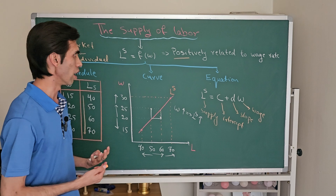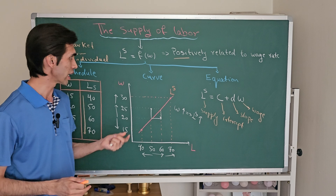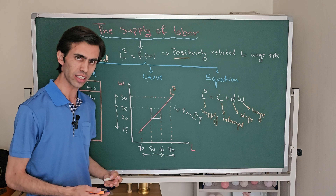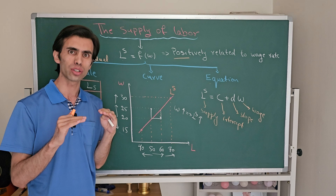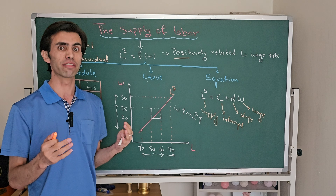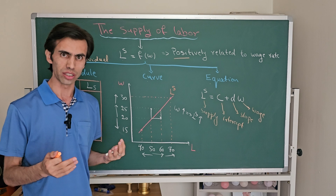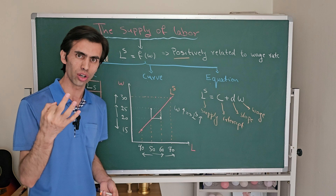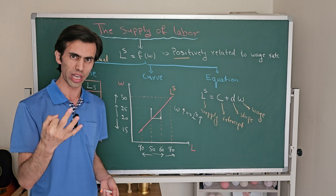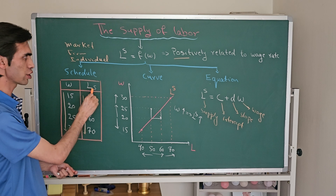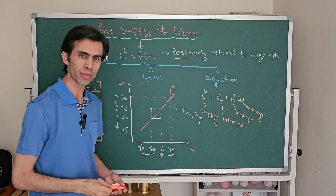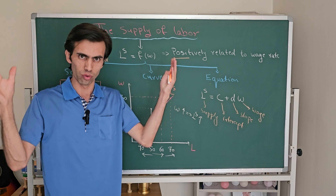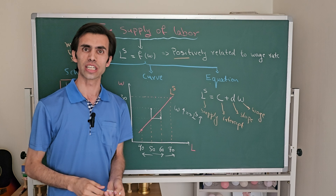Overall, as a conclusion, labor supply in the labor market is positively related to the wage rate when other affecting factors are fixed — that means we consider the ceteris paribus assumption. There are three tools to show the relationship between wages and labor supply: the labor supply schedule, the labor supply curve, and the labor supply equation. I hope the labor supply within the labor market at the industry level is now clear for you.